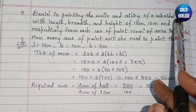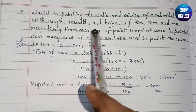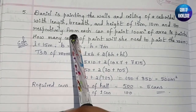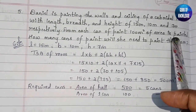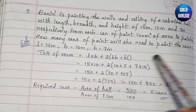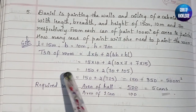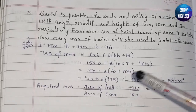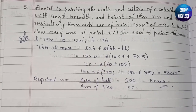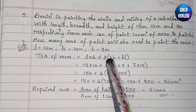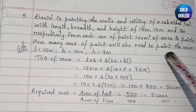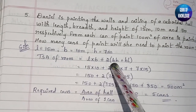Fifth question: Daniel is painting the walls and ceiling of a cuboidal hall with length 15 m, breadth 10 m, and height 7 m. From each can of paint, 100 m² of area is painted. How many cans of paint will she need? Since she paints walls and ceiling but not the floor, TSA of room = l×b + 2(bh + hl).